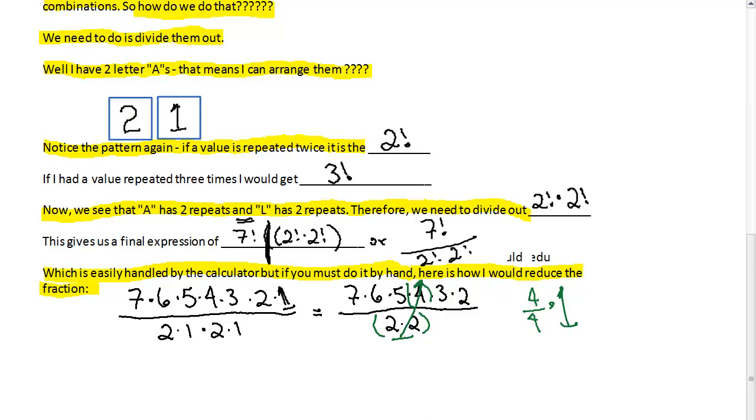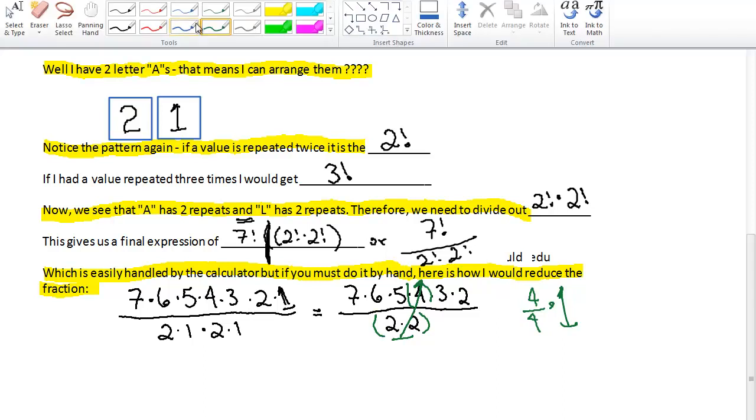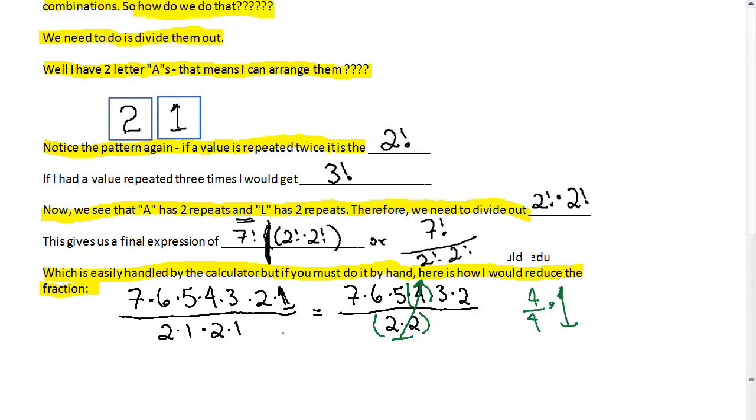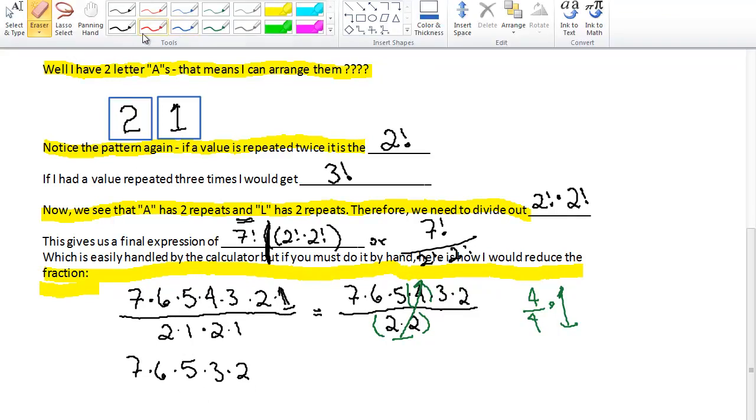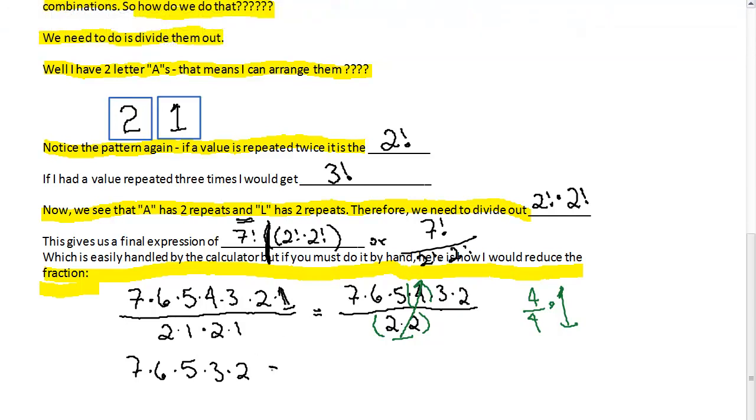Do not use the word cancel. That is not what happened. Those values did not go away. So now, basically what I have is seven times six times five times three times two, all over one, but really, I don't need the over one because anything divided by one is just itself. And so now, I just need to multiply this.